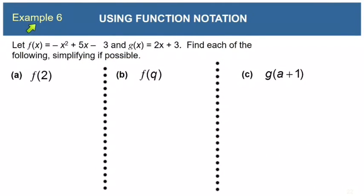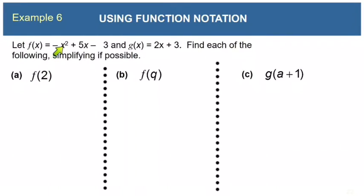We're going to practice. This is example 6. Let f of x equal negative x squared plus 5x minus 3, and let g of x equal 2x plus 3. We want to find each of the following and simplify if possible. The first one says f of 2, which means take the f function and plug in a 2. Everywhere it says x, put in a 2, giving us negative 2 squared plus 5 times 2 minus 3.